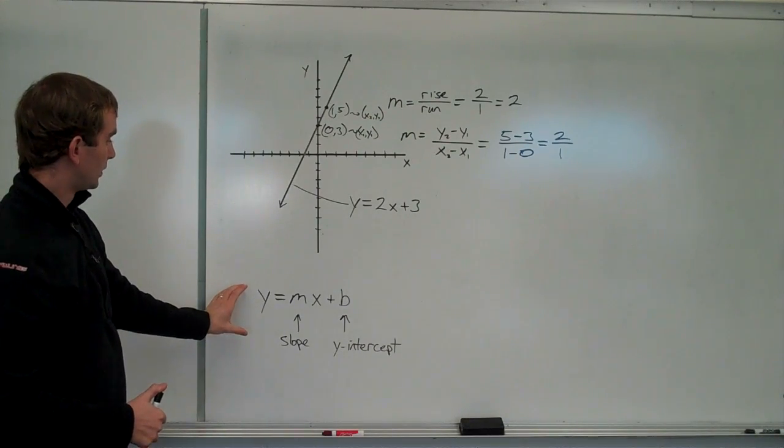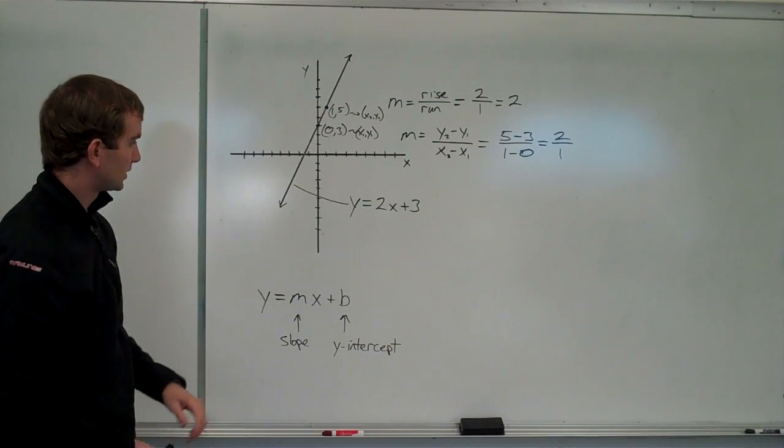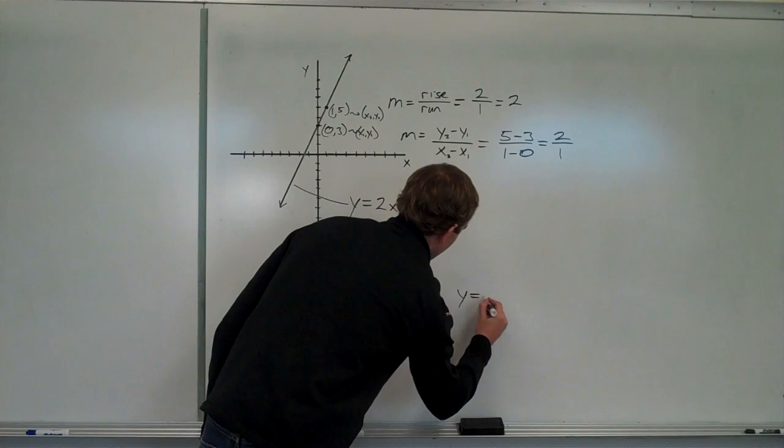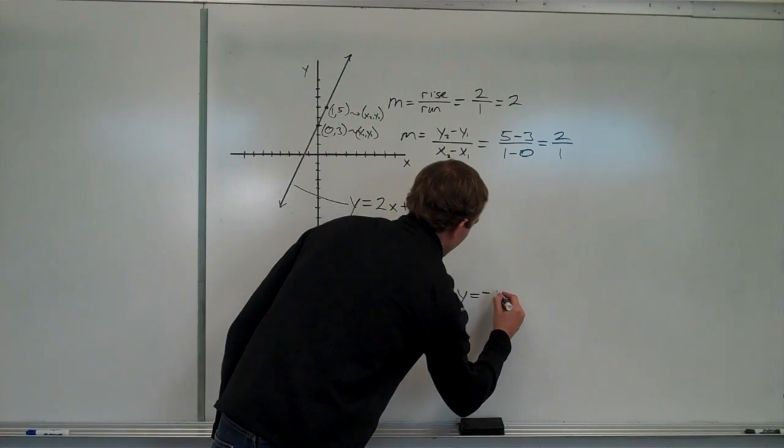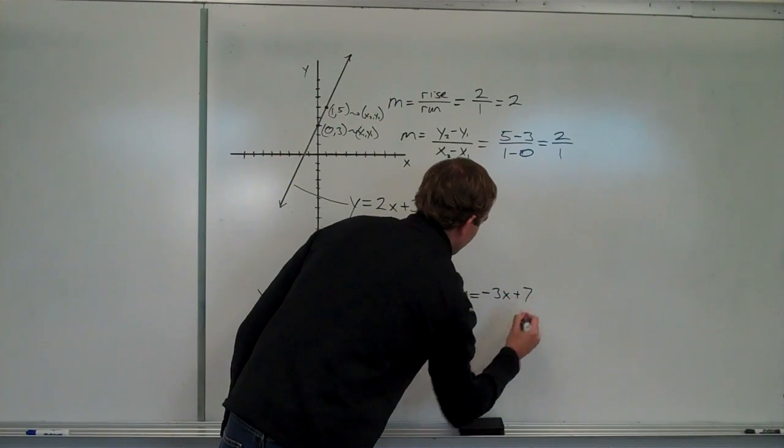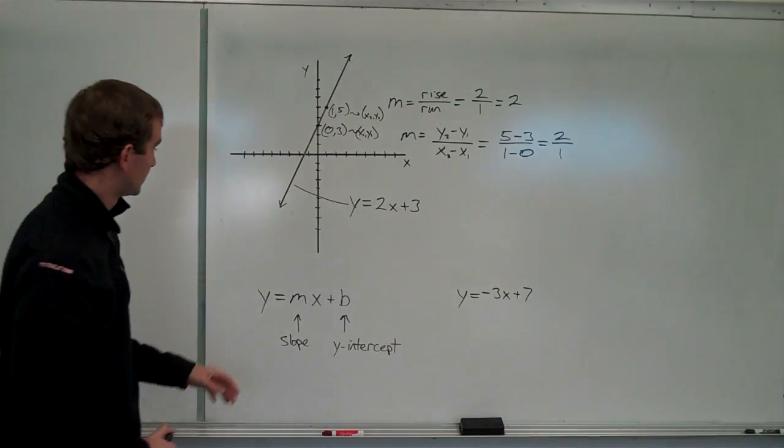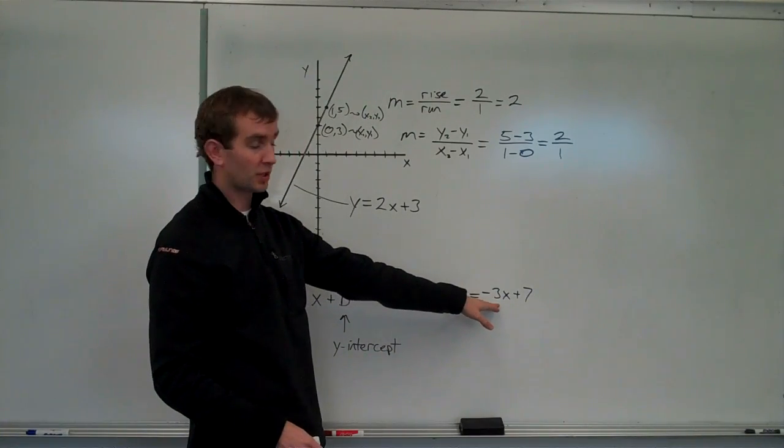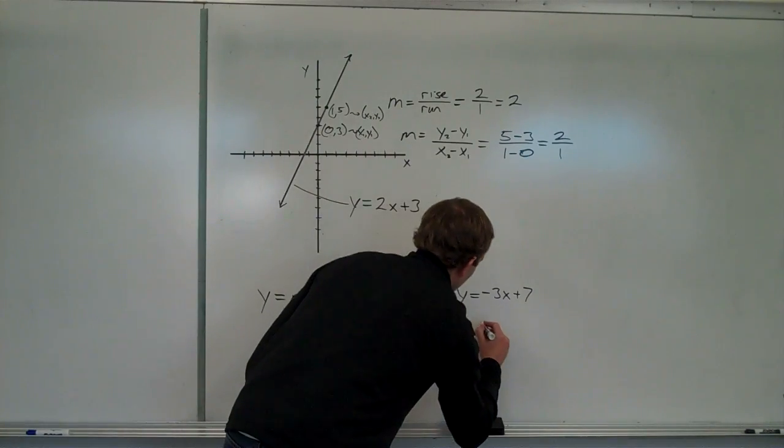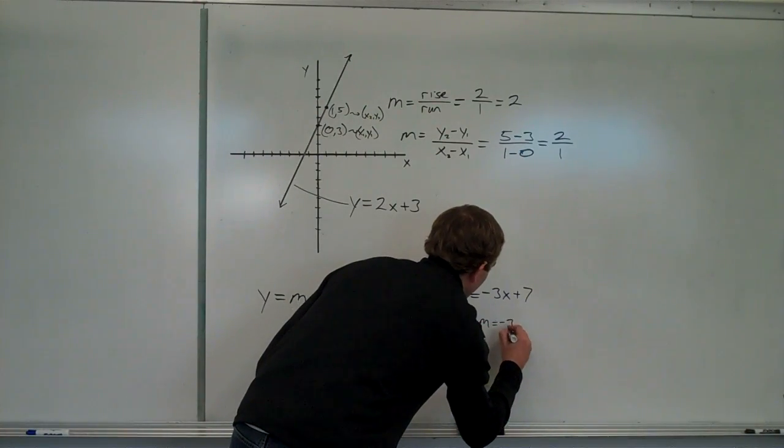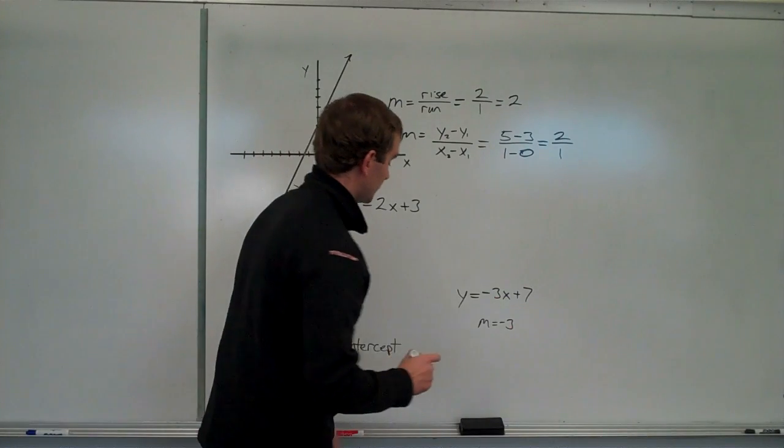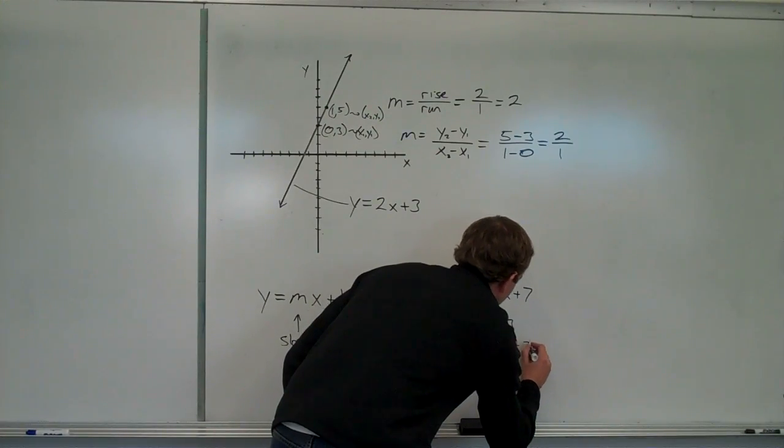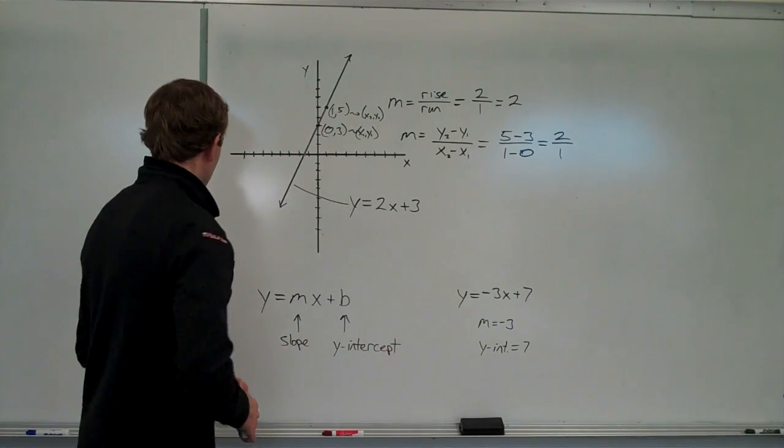So, that's a quick overview of slope intercept form. The last thing I'll talk about is if I give you the equation of a line, for example, if I give you y equals negative three x plus seven, how would you graph that? And that's really quite simple. You first identify what your slope is. Slope, again, is whatever comes before x. In this case, m, our slope, equals negative three. And our y intercept is going to be seven. Y intercept equals seven. That's where it's going to cross the y axis.